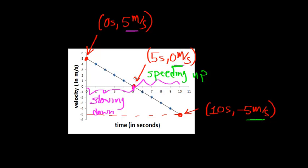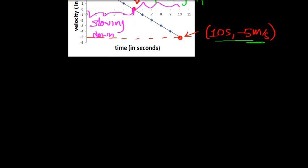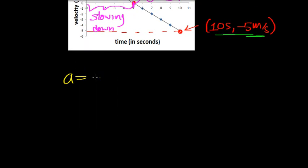Now we can actually calculate how fast the velocity is changing — that is, the acceleration. We can pick any of the points on the line because the slope of the line is going to be the same. The acceleration is going to be constant. I'm going to use the relationship that acceleration is the change in velocity divided by the change in time — in other words, how fast the velocity changes over this interval of time.